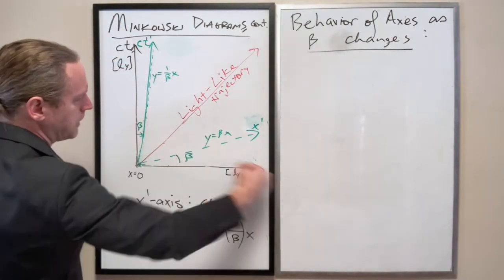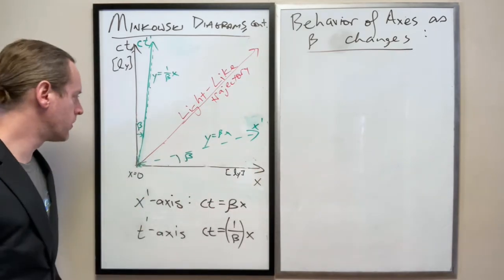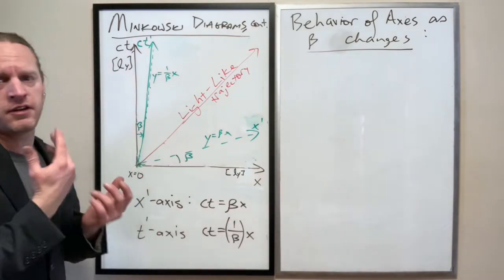And then a slope of 0 means that this is coincident with the x-axis here. So those both match in the 0 case.